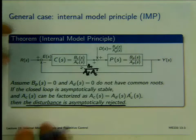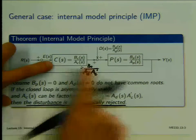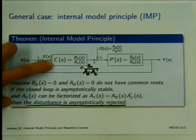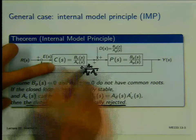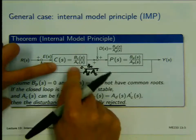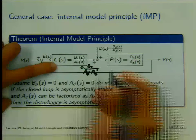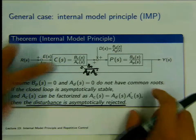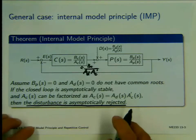It's a very basic, intuitive idea. If you build the disturbance structure inside the controller, the controller creates a kind of counter-disturbance generator — something that cancels the disturbance — and we achieve asymptotic disturbance rejection.